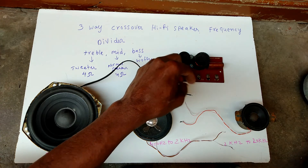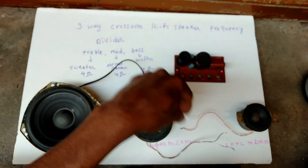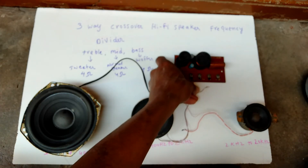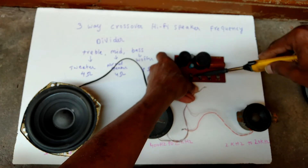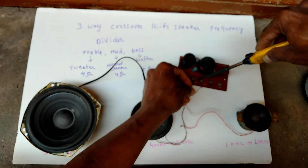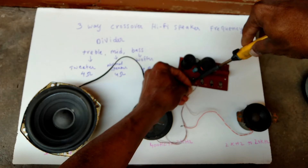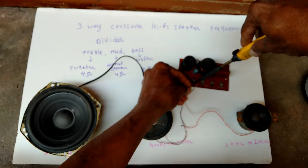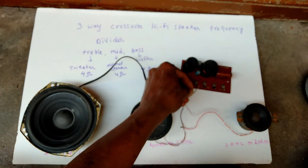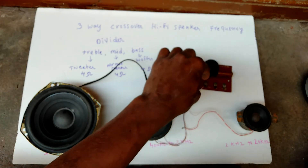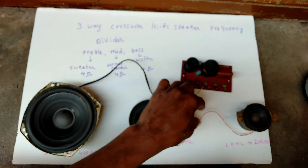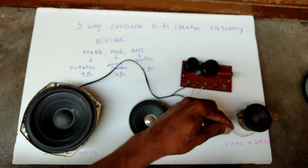And this midrange positive, here we have to connect. Midrange — all these speakers, we have to connect woofer, midrange, and tweeter. We have to use the correct terminals only. Then only it will equally split.